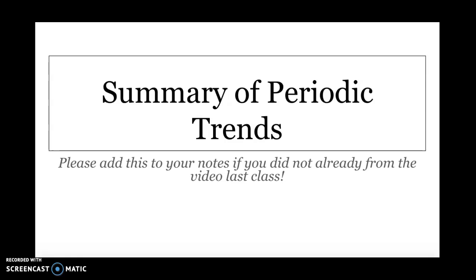I would like you to go to the Castle Learning I have for you. It will be labeled 'periodic trends,' and then once you finish that and make note of any questions you're getting incorrect, I would like you to go over to the periodic trends worksheet that I have for you. It is lengthy and will serve as a great review for how the periodic table is set up. You're going to complete it on Kami and turn it in when you're done.